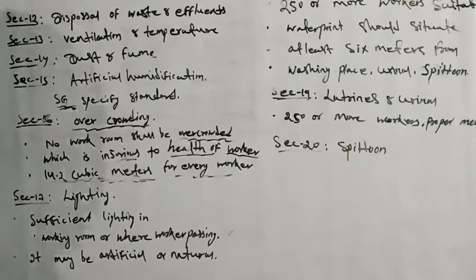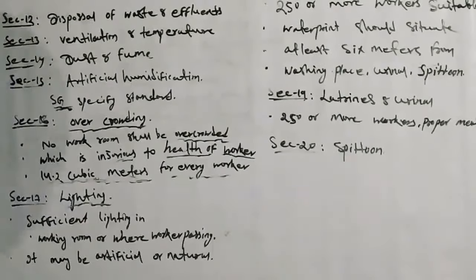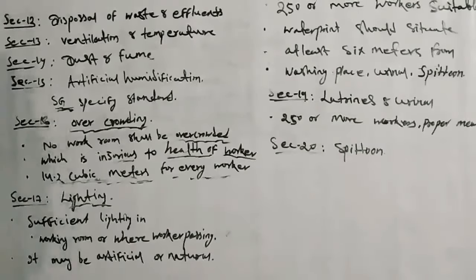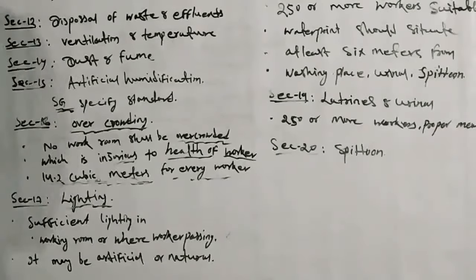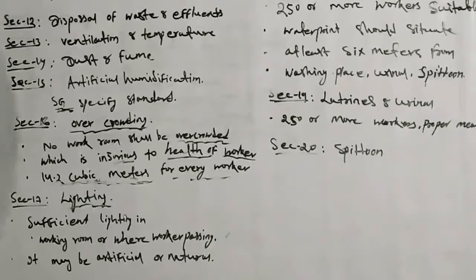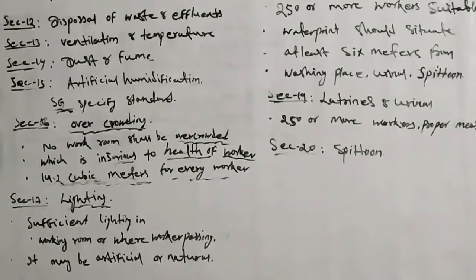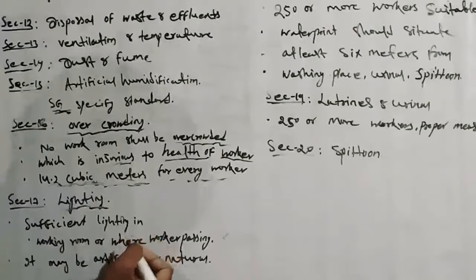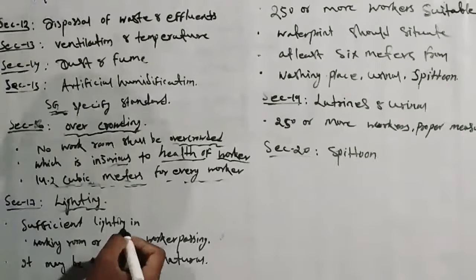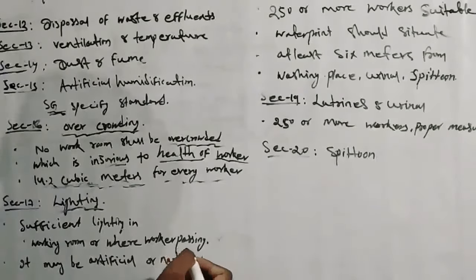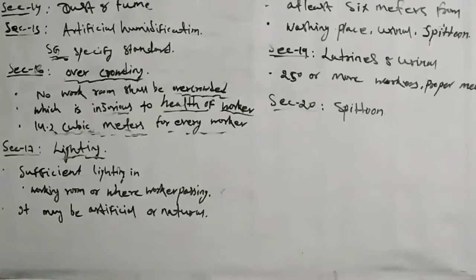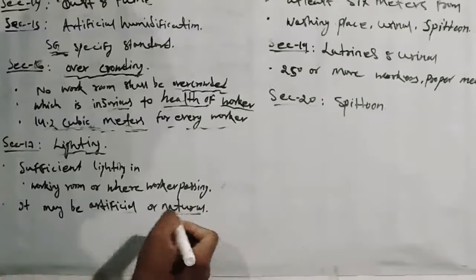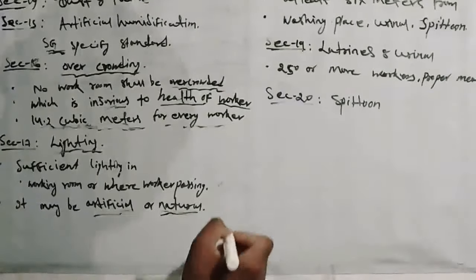Next, Section 17: Lighting. While workers are working in the factory, there should be proper lighting — that may be natural or artificial. Sufficient lighting should be provided in the working room and where workers are passing through. Proper lighting honi chahiye, artificial or natural.